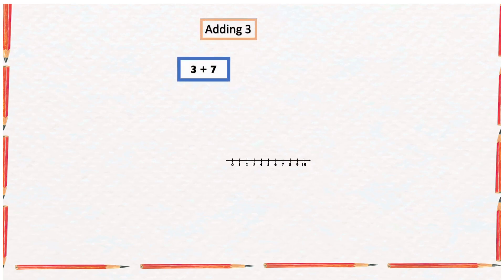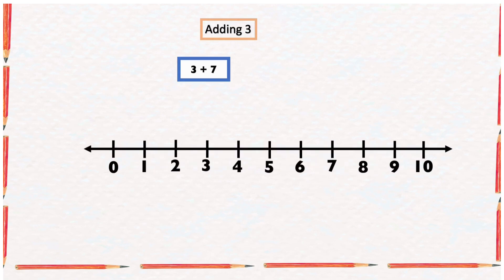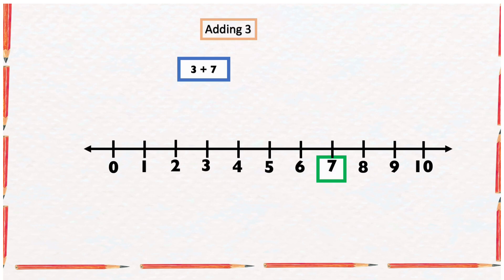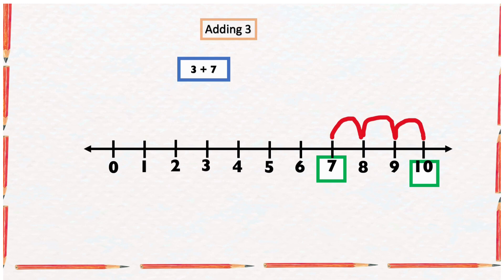Let's look at one more example: three plus seven. We could start from three and count seven numbers forward, but that would be a long way. So we start from the bigger number, seven, and count three numbers forward: one, two, three. The answer is ten. The sum of three and seven is equal to ten. Thank you for listening — please don't forget to subscribe, like, and share with friends.